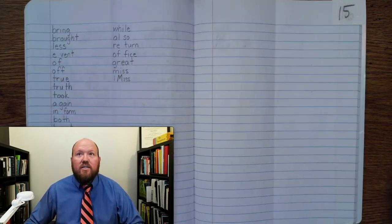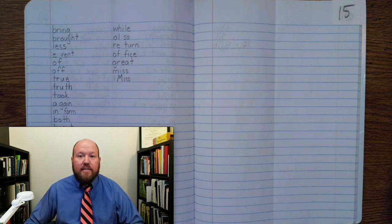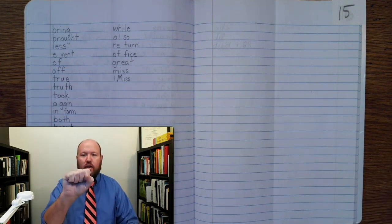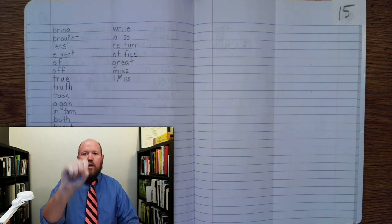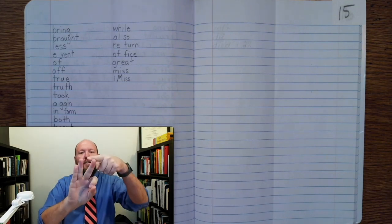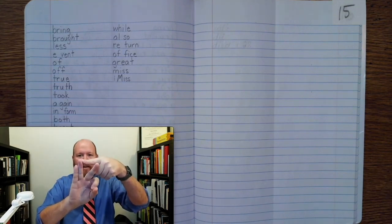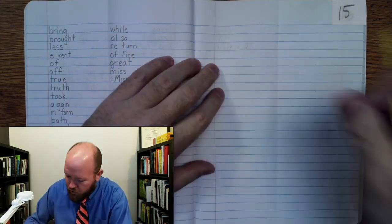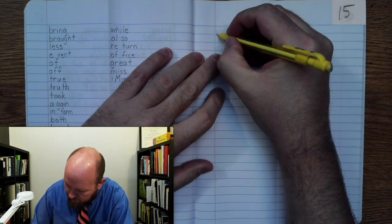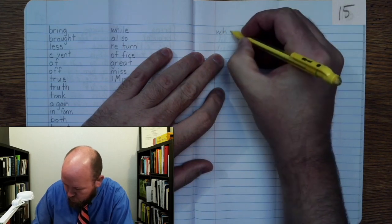Alright, the first word is the word WHO. Now WHO is an unusual word because it does not follow our spelling rules. WHO, base word WHO. We're actually going to use the WH to make that sound. Write WHO.